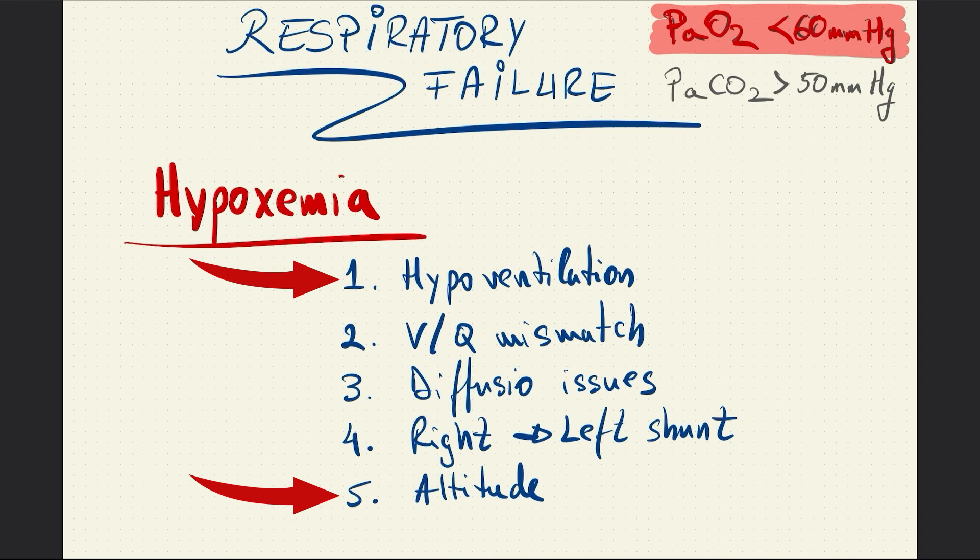Both hypoventilation and altitude lead to hypoxemia, however only hypoventilation will be accompanied by hypercapnia. They are good examples of type 1 and type 2 respiratory failure. Altitude is a pure type 1 respiratory failure while hypoventilation is an example of type 2 respiratory failure with hypercapnia.